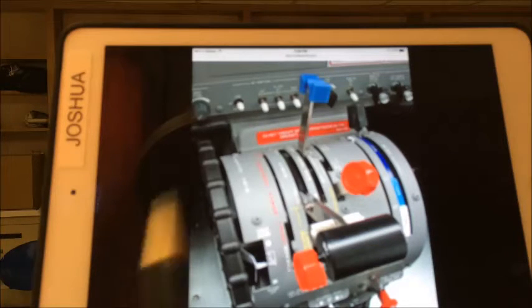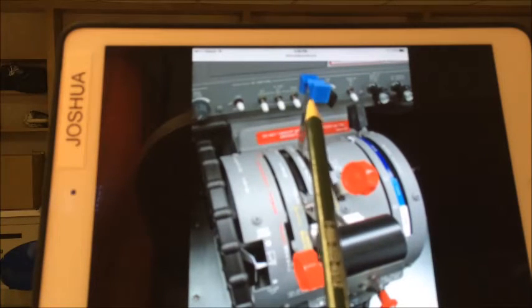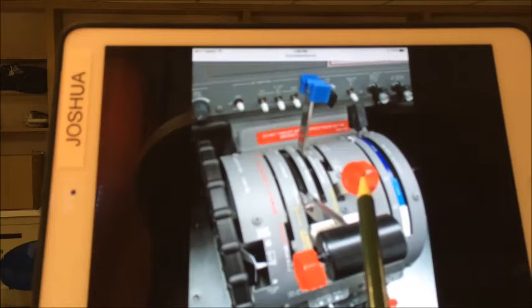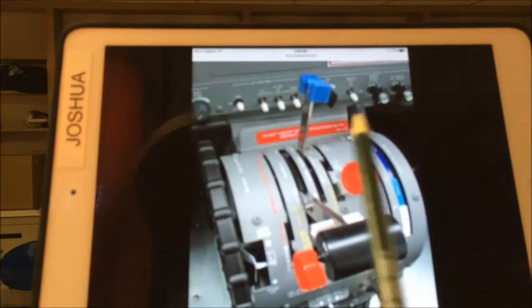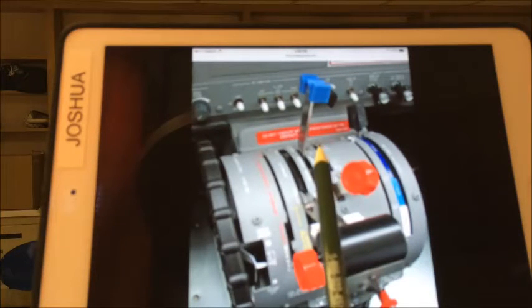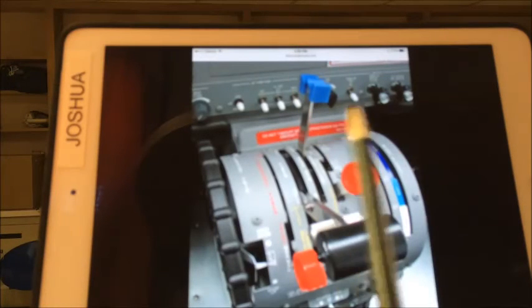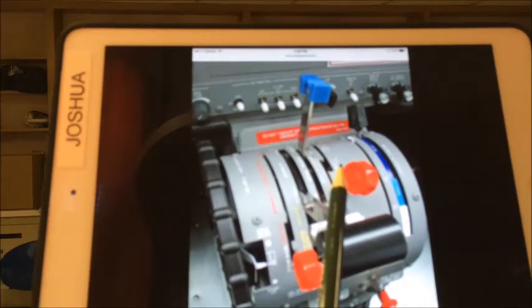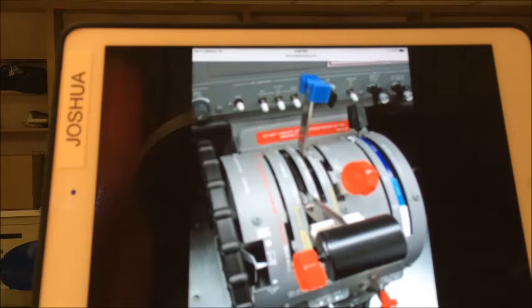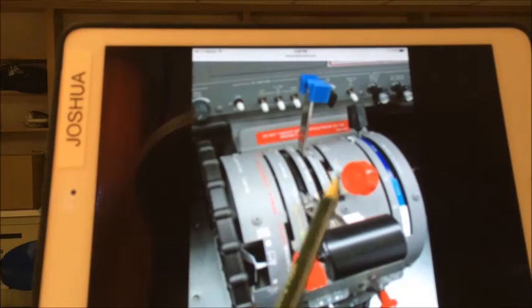On the left side, you have your power lever; in the center, your prop lever; and on the right side, your condition lever. There are three positions for the condition lever. High idle is at the top and is used in flight operations; it must be set for takeoff power. Low idle is right before the detent and is used for ground operations. Finally, cutoff is past the detent and cuts off fuel to the engine.